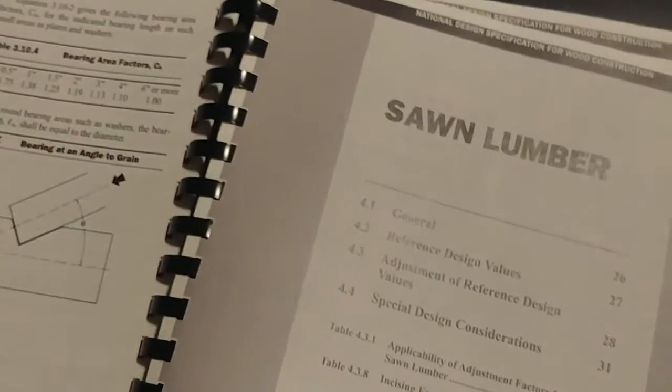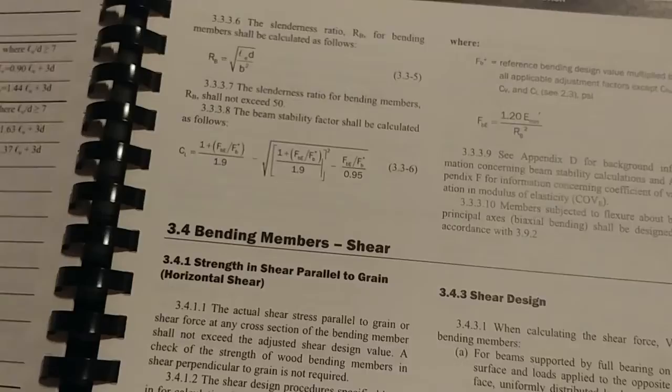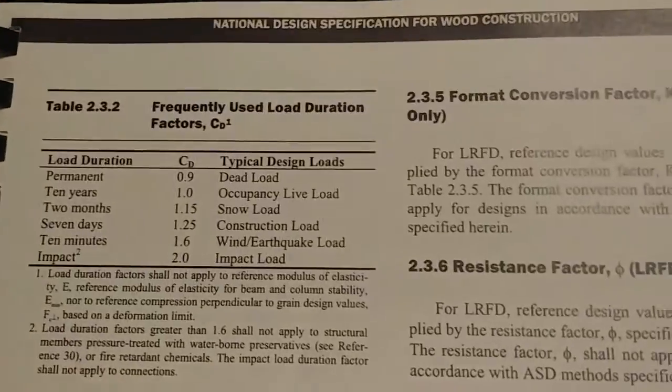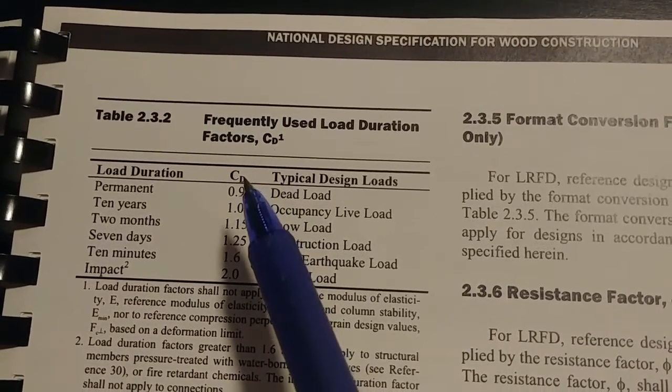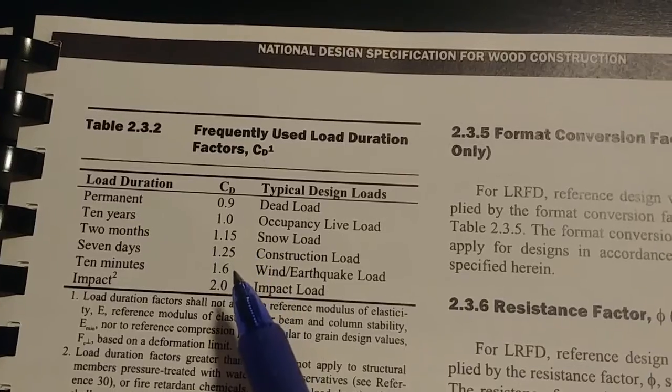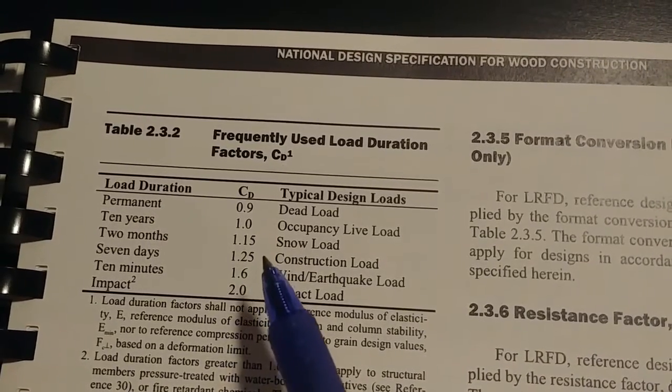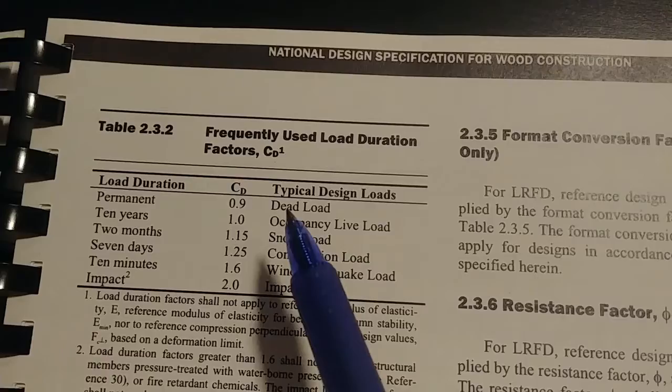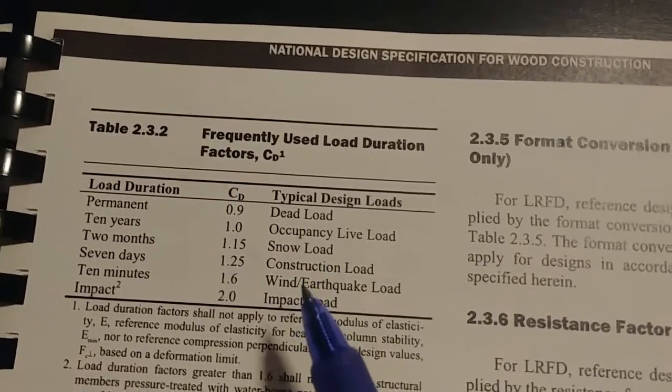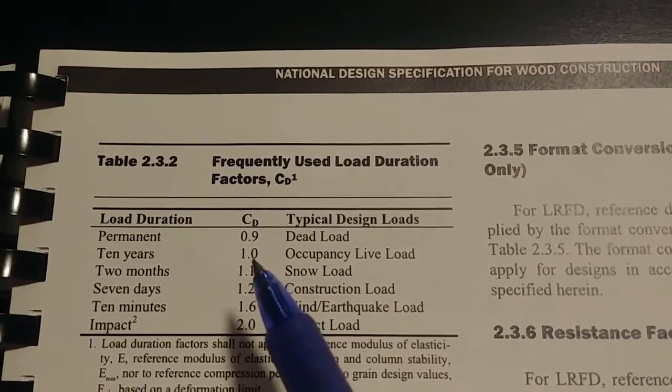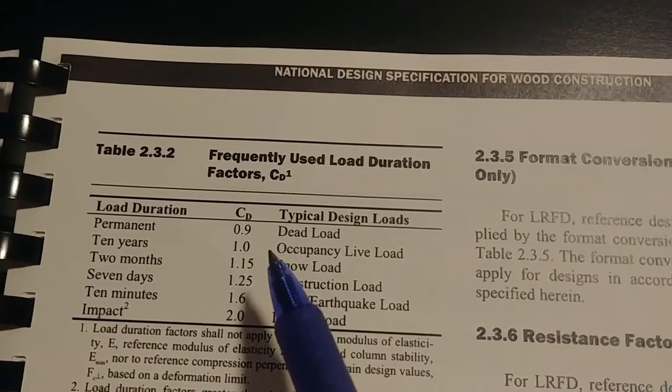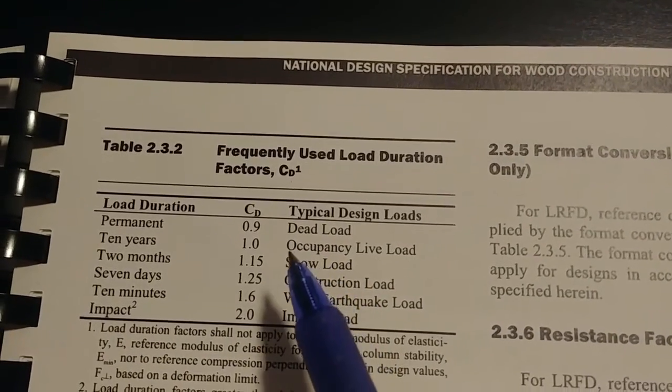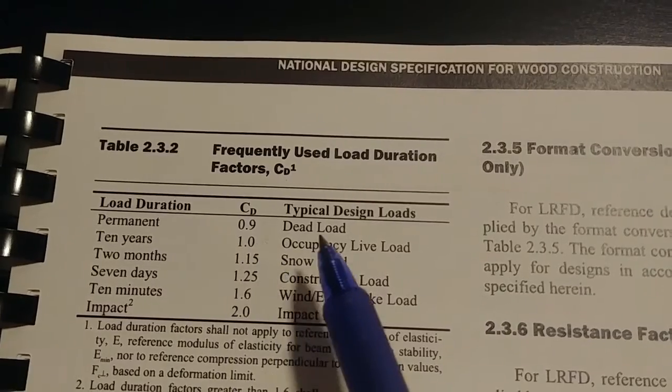And that's actually back in this book and it's way back at the beginning. If I can see if I can do it. Yes. So table 2.3.2, your load duration factor is based on the largest load acting on your member. So for this case, it would be the live load because the live load is 40 PSF versus the dead load, which is just 10 PSF. So it would be your CD would be 1.0.